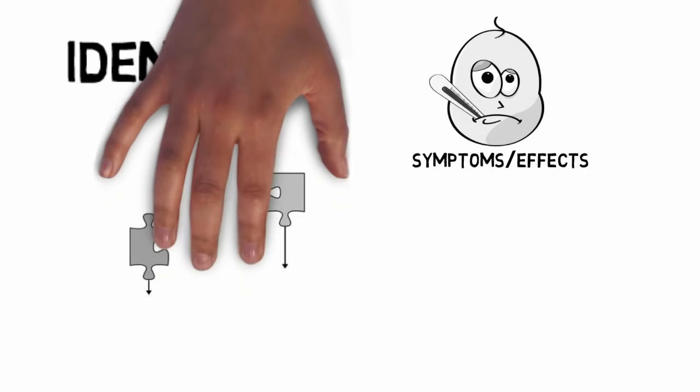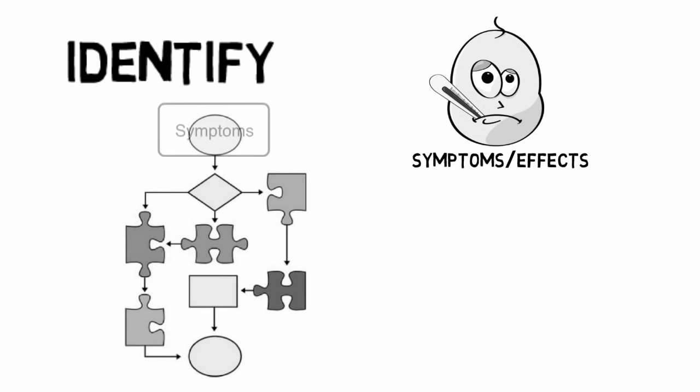Oftentimes, problems are like puzzles with pieces that interconnect and overlap, forming a system. This can make it difficult to separate symptoms from the underlying root causes we need to address. To identify root cause or causes, a common method is to ask ourselves why. What is causing the symptom? With each answer, we ask ourselves why again. This creates a chain of responses, ending when we can no longer determine why something is taking place. The end of the chain is the root cause we need to address.